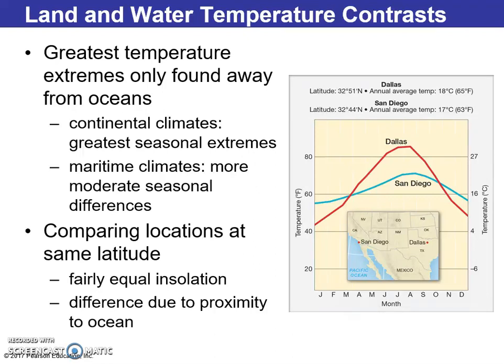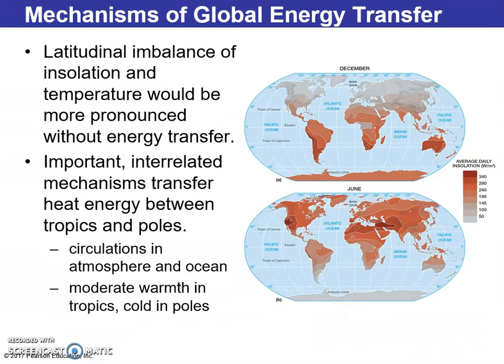We learned that temperature really varies by land and water. In the San Diego example, the temperature is almost always the same since it's so close to the Pacific Ocean. Going to Dallas, which is inland, and our other example, Fargo, North Dakota, we see quite a bit of temperature variation — that really tells the story.